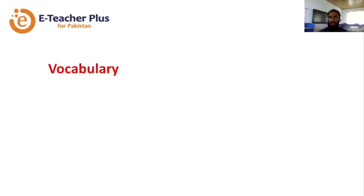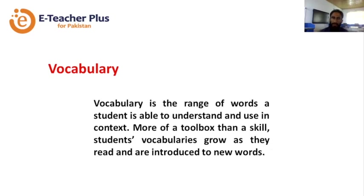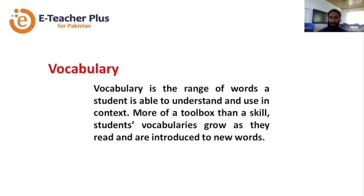Vocabulary is the third reading component. It's very important — if students have strong vocabulary, they may be able to tackle unfamiliar or challenging text as well. Vocabulary is a range of words a student is able to understand and use in context. For example, a student may know the names of all colors, but they must be able to judge the difference between black and white and use the words in context — that is true vocabulary.